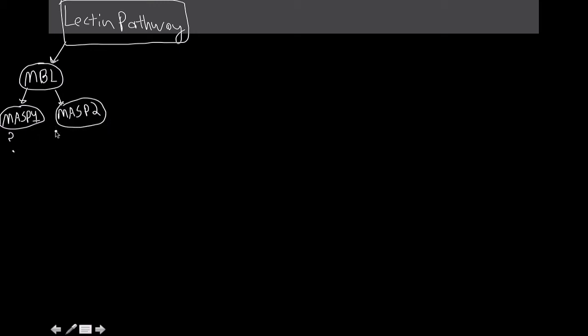And we don't really know what MASP1 does, so I'm just going to leave a question mark for there. But we know what MASP2 does. And MASP2 is active, in the active form, whenever it's binding, whenever the mannose binding lectin becomes activated.